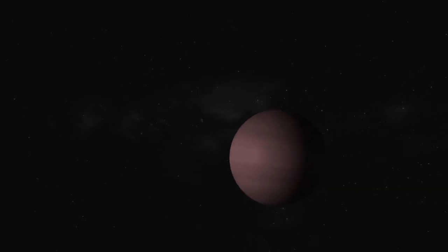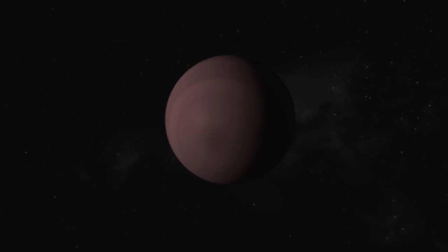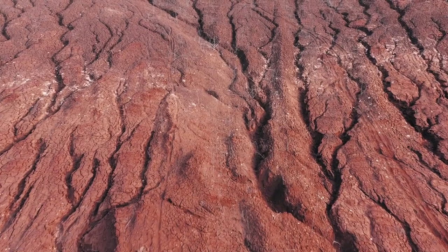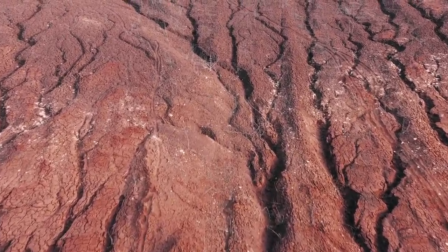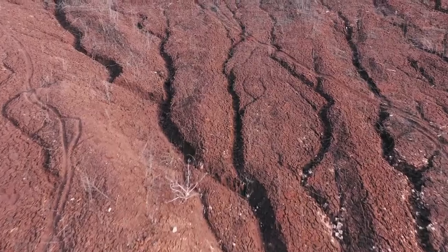Kepler-70b is what's known as a scorched remnant. It didn't always look this way. Long ago it was likely a massive gas giant, much like Jupiter in our own solar system. It had a thick atmosphere, swirling clouds and deep layers of hydrogen and helium.